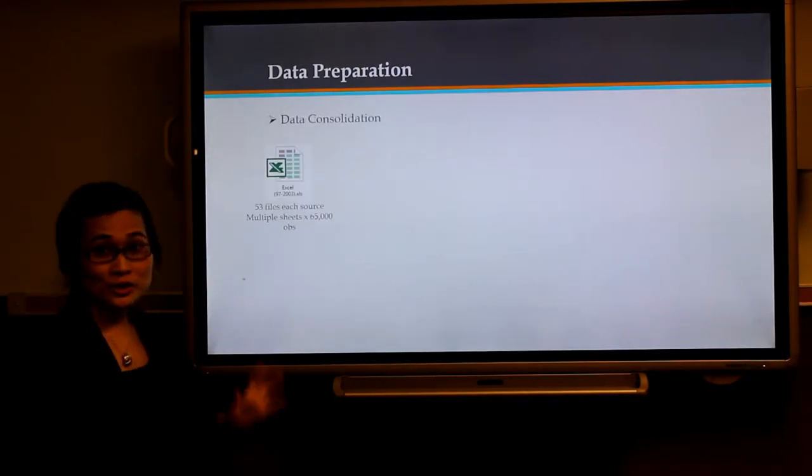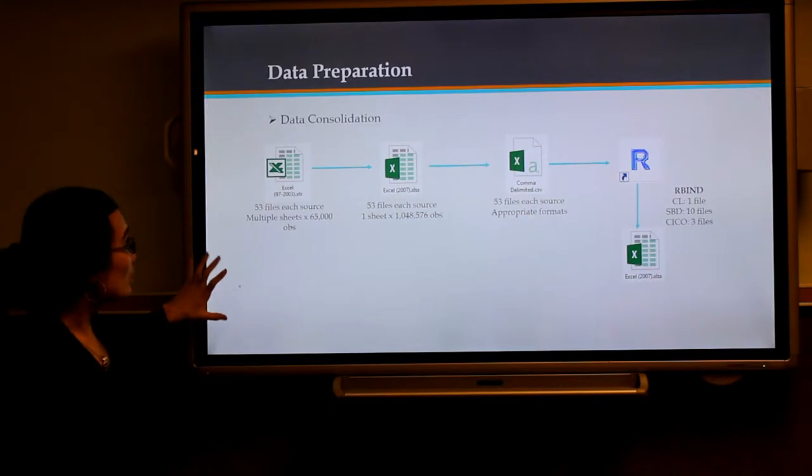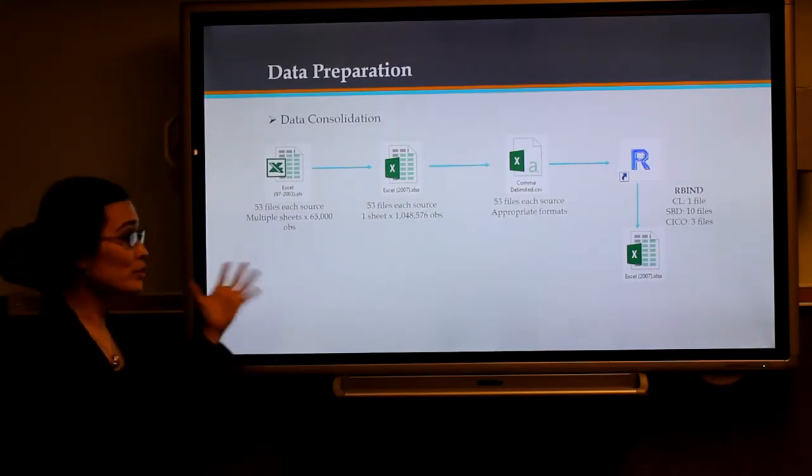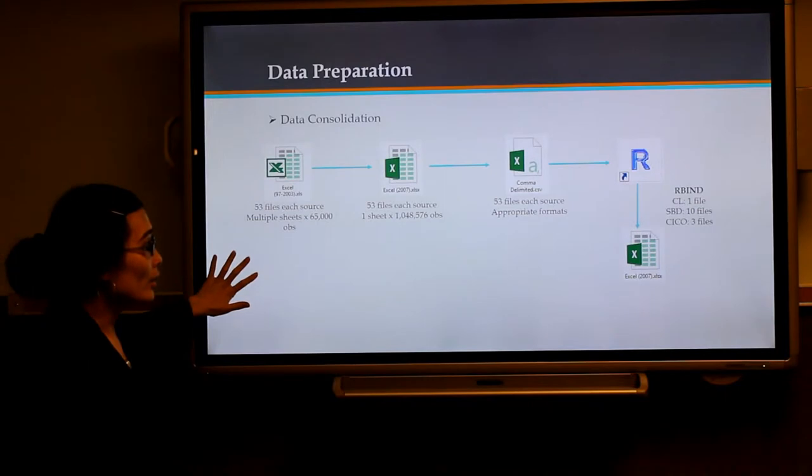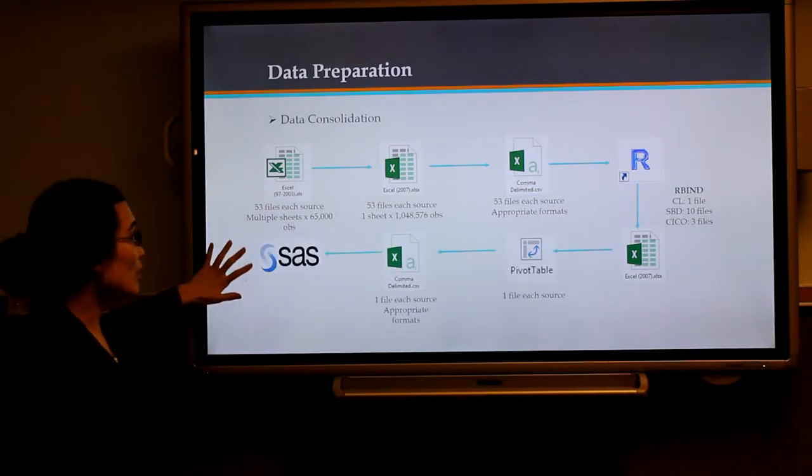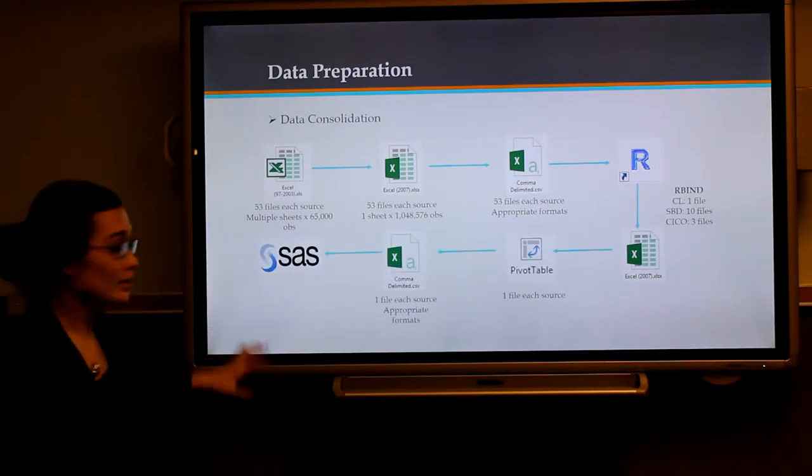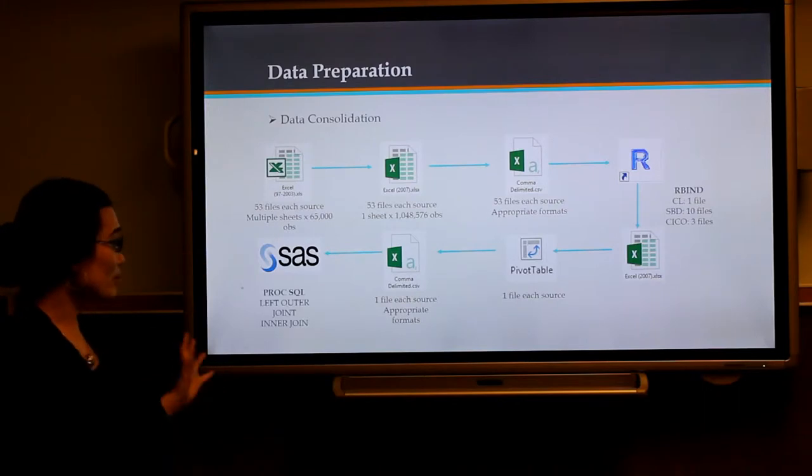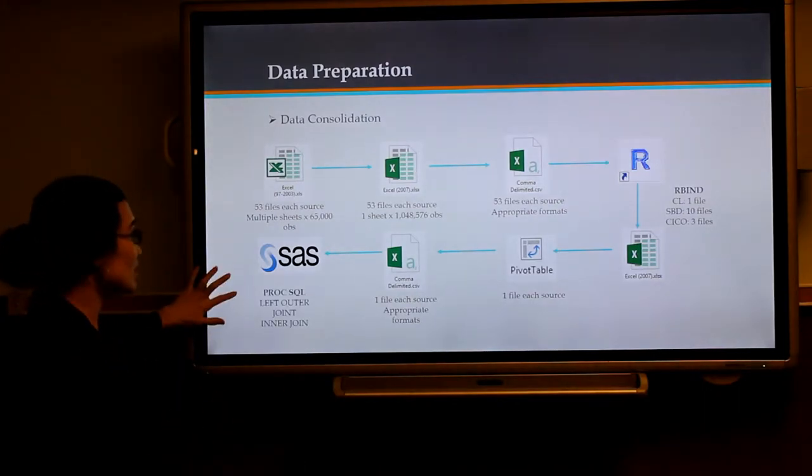For data consolidation, we have to do a lot with converting data from old format to new format, then combine it using R and pivot table for aggregating. Finally, we combine all the different data sets using our sequence set.